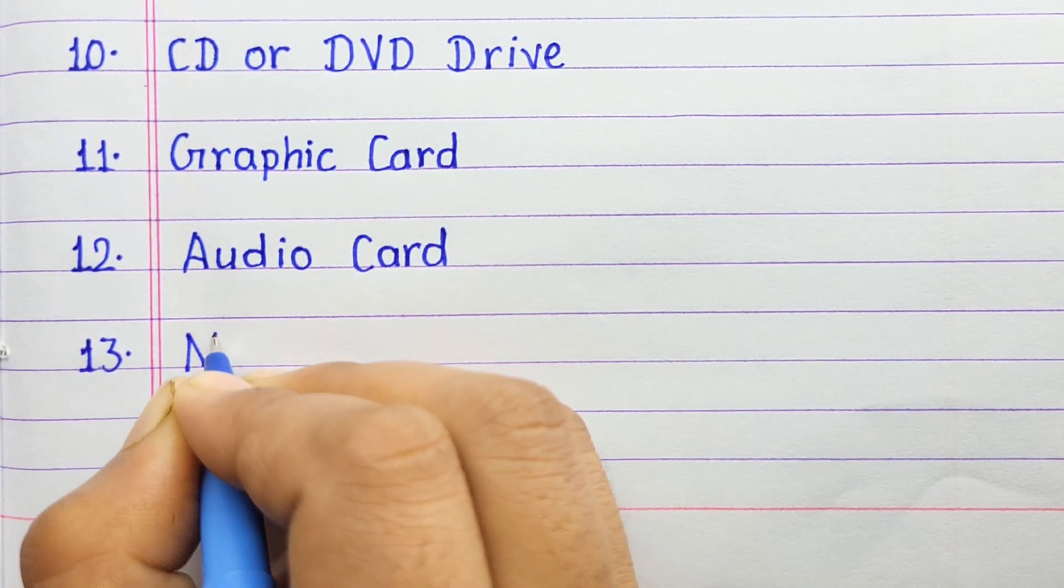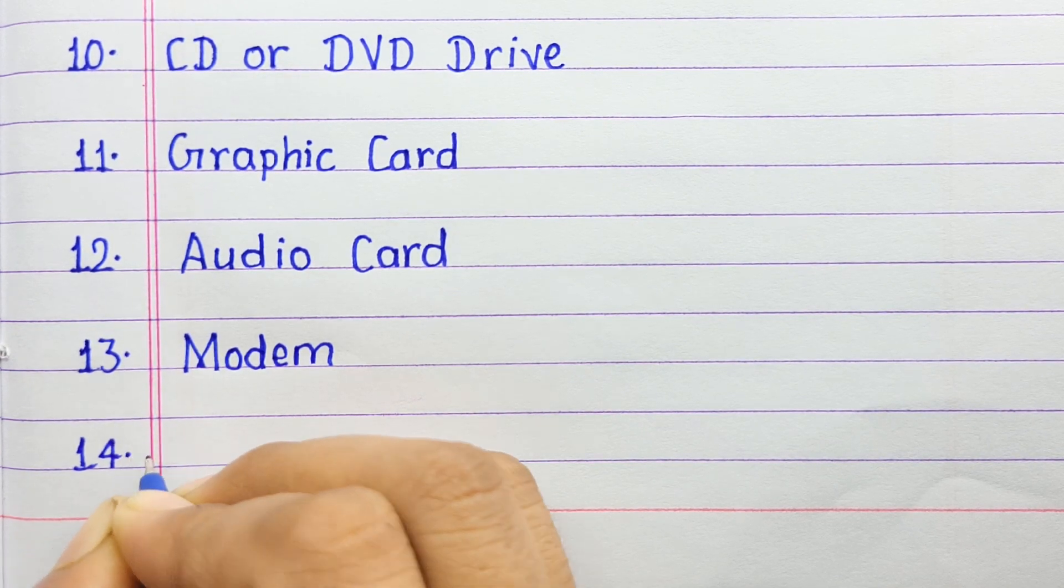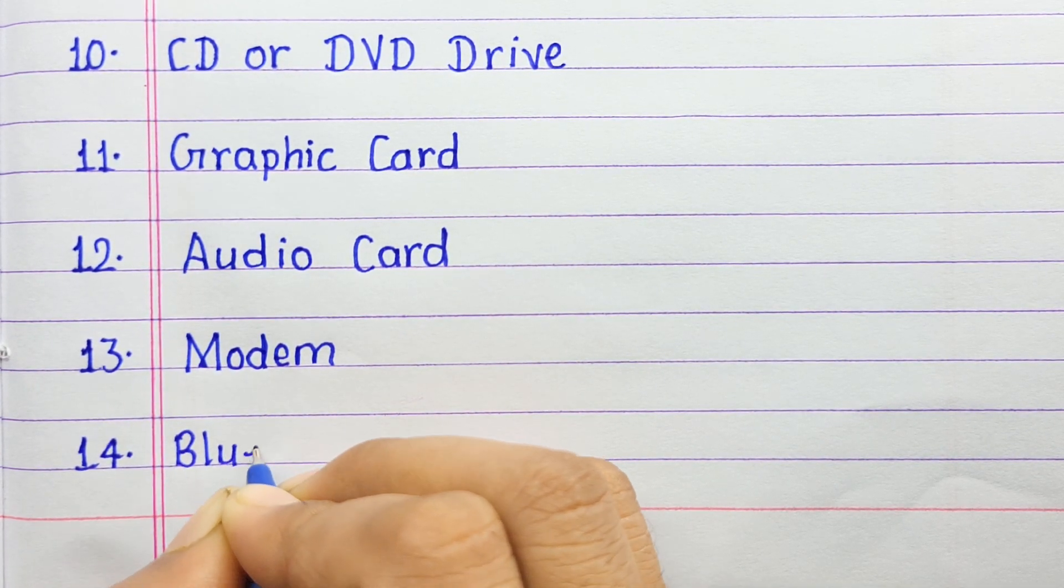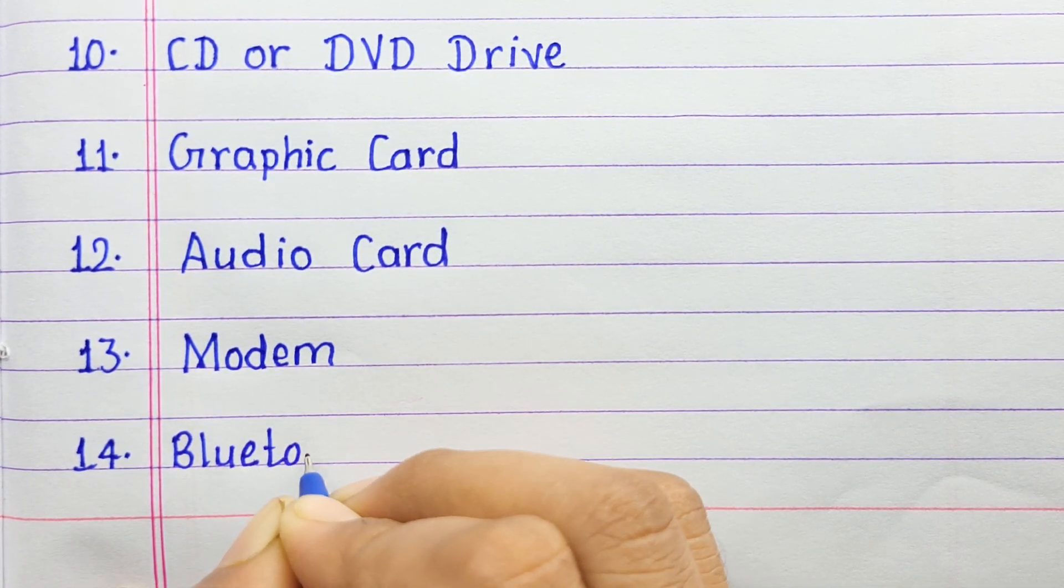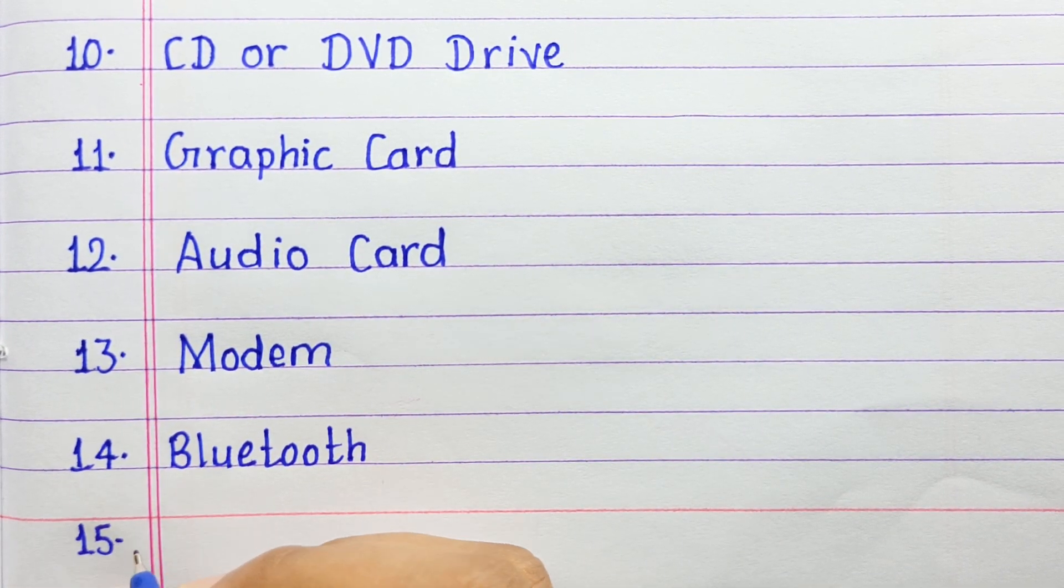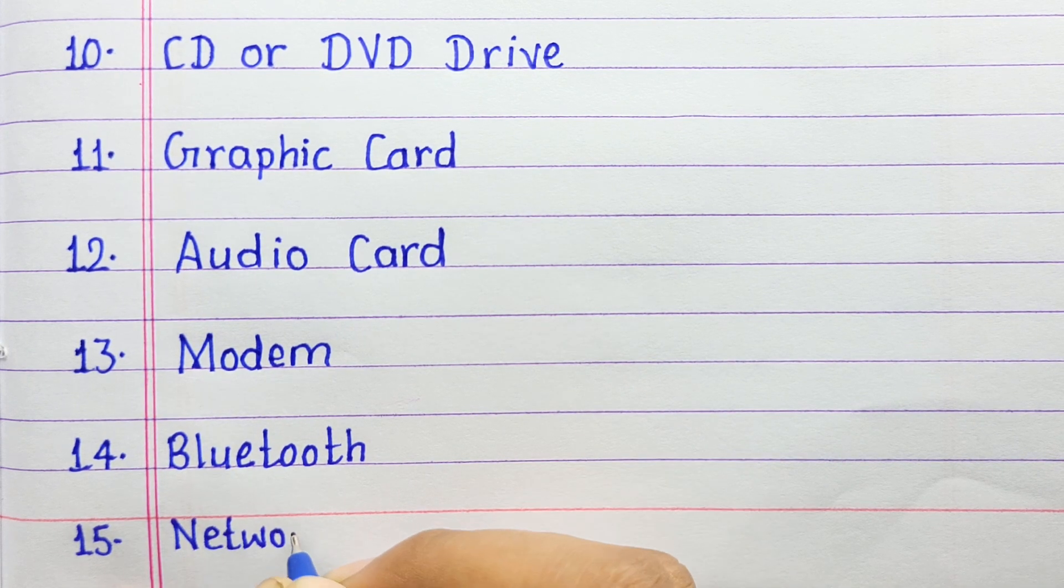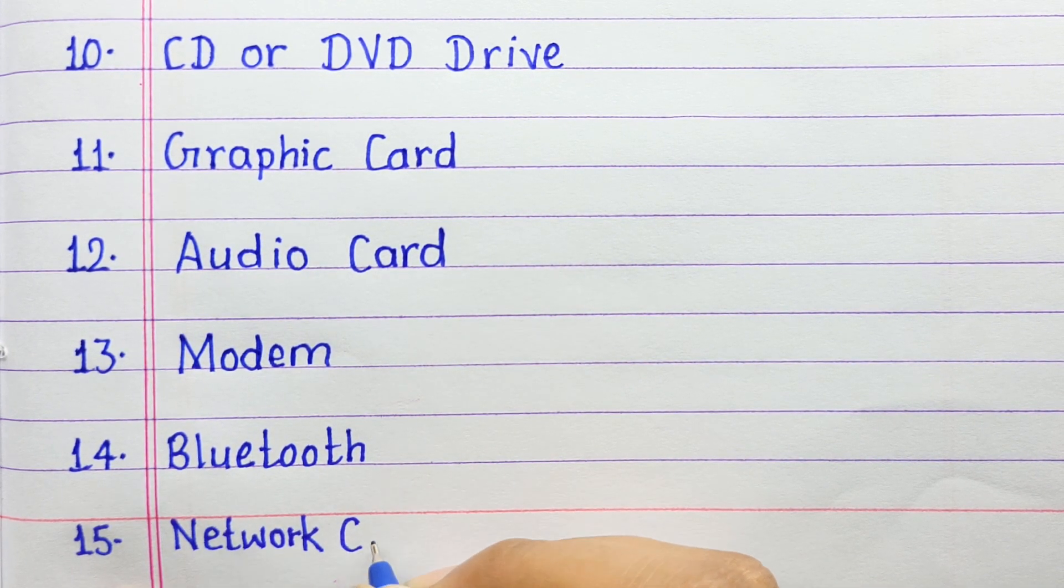Number thirteen: modem. Number fourteen: bluetooth. Number fifteen: network card.